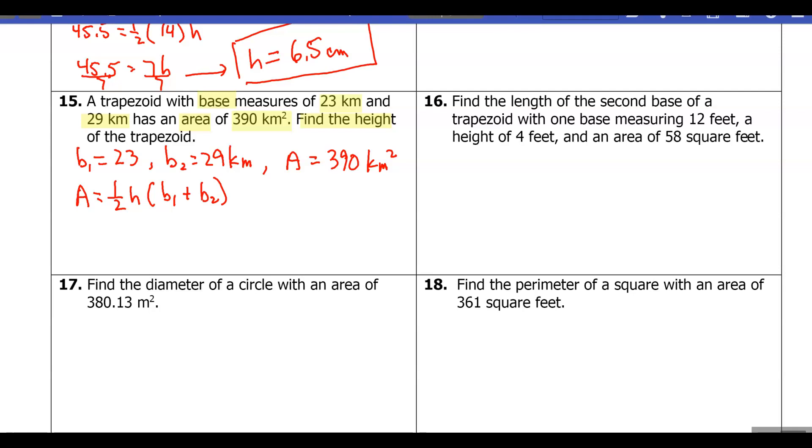in the three that we know. So I know that A is 390, one-half—I'm going to put the h back in there—and then b1 we let be 23, and b2 we let be 29. Again, it doesn't matter which one's b1 and which one's b2.